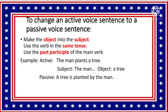Look at the active sentence: the man plants a tree. The subject is the man, the object is the tree. But in the passive sentence, the object tree becomes the subject. So, a tree is planted by the man.